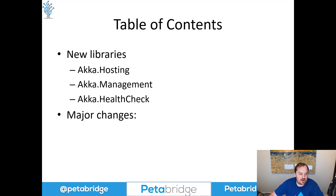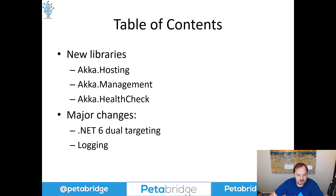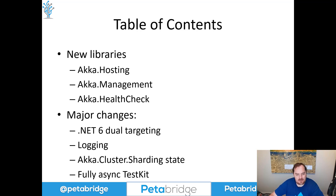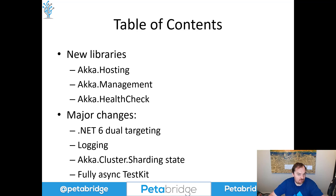And then some major changes to the core of Aka.NET, such as .NET 6 dual targeting, the logging system has gotten a major facelift, we've made significant improvements to Aka.cluster sharding, and the Aka.testkit is now fully asynchronous. So there's no more blocking methods you have to work around inside your test suite. Everything can be async awaited inside the test suite for Aka.NET going forward.